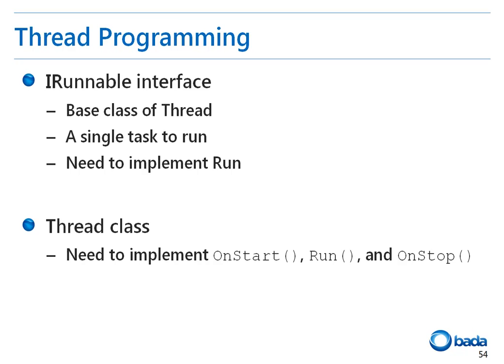Bada's thread programming model basically uses the IRunnable interface. This IRunnable interface is the base class of the thread class and has a virtual function, run. You can create a thread by implementing the code in the run virtual function. The class derived from the IRunnable interface is the thread class. The thread class has the onStart, run, and onStop virtual functions.